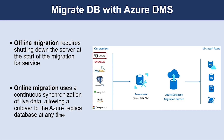The Migration Service provides two different types to migrate SQL Server databases: Offline Migration or Online Migration. An offline migration requires shutting down the server at the start of the migration, which means downtime for the service. An online migration uses a continuous synchronization of live data, allowing a cutover to an Azure Replica Database at any time. The online option is the better of the two if you need to minimize downtime for your workload.